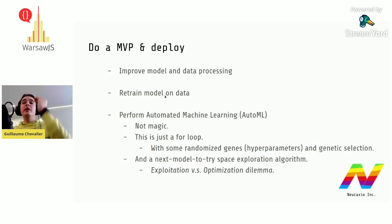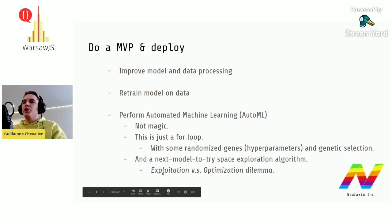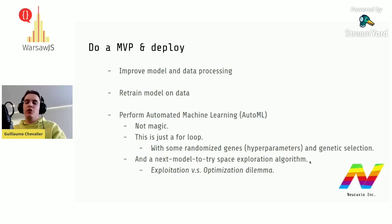You will retrain the model on the data many times using the automated machine learning loop. This is not magic — it is basically a for-loop with randomized hyperparameters (the genetic code for your models), and you pick the best one. Throughout the loop, you need a next-model-to-try space exploration algorithm to pick the next hyperparameters. It could also be purely random — your computer will just run longer. But AutoML greatly helps.